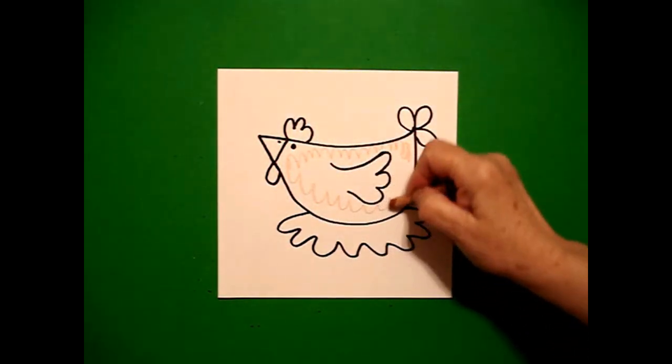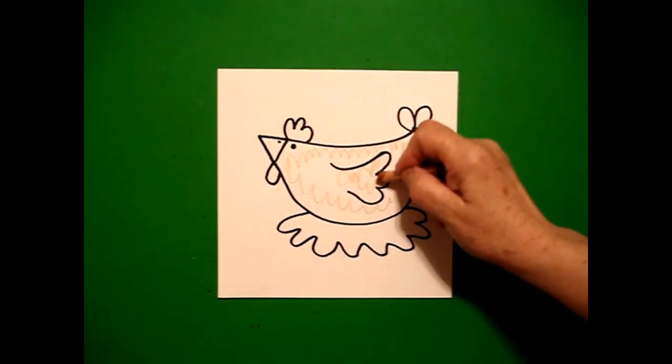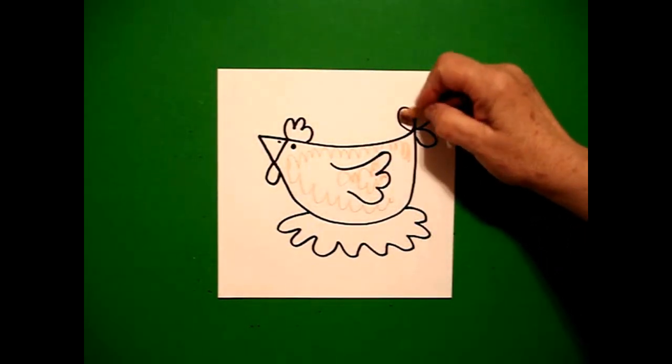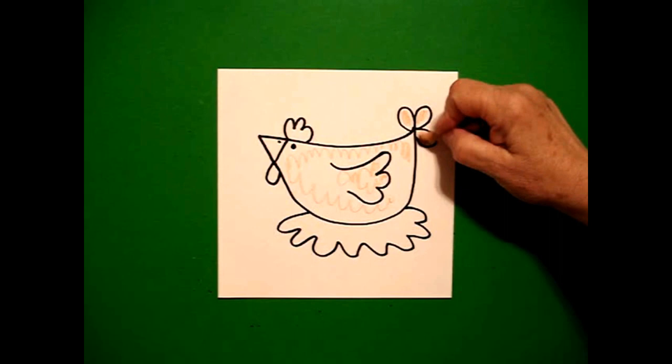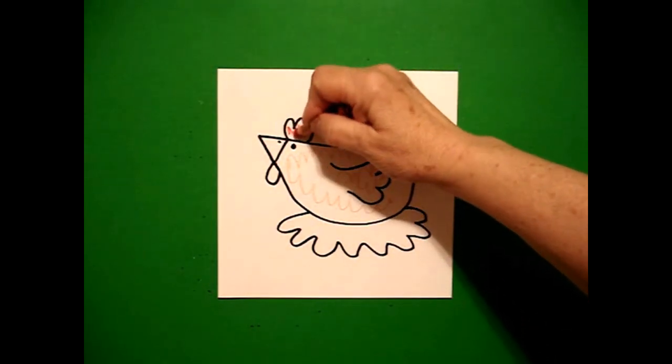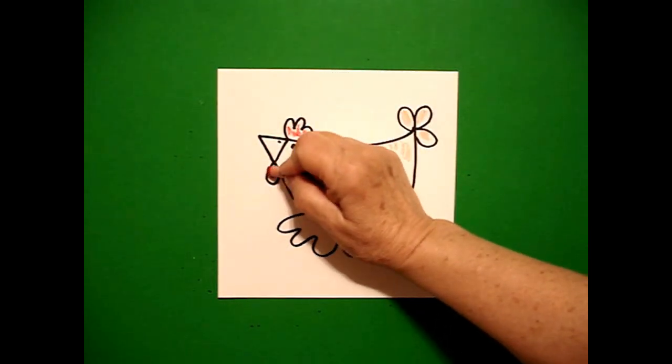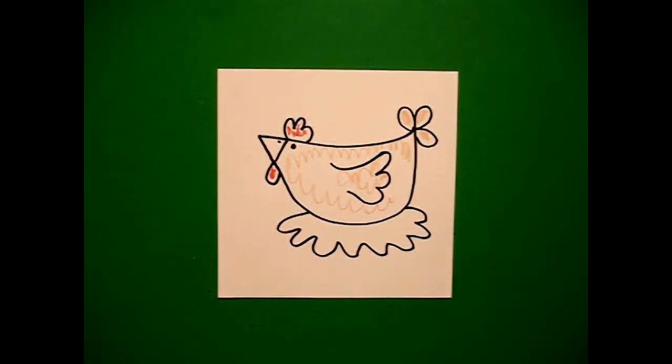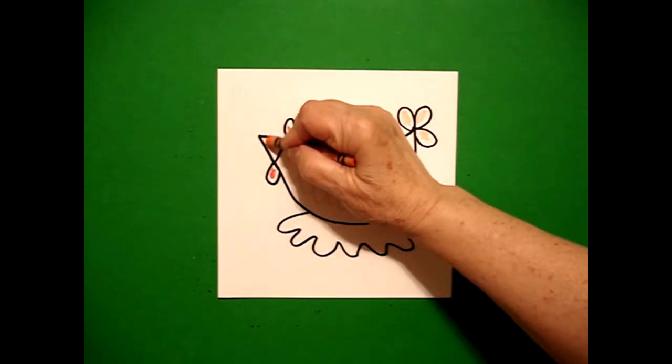a light brown on my body, my wings, and my tail feathers. I'm going to come in with a red and do my crown and my waddle. And I'm going to use orange for my beak.